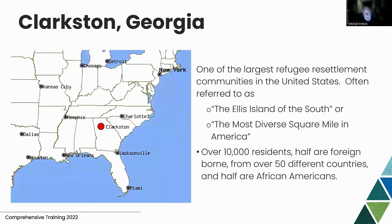Refugees get resettled in communities across the U.S. Clarkston, outside Atlanta, Georgia, is one of the largest refugee resettlement communities in the U.S. — often referred to as the Ellis Island of the South. It has over 10,000 residents: half are foreign-born from 50 different countries, and interestingly, the other half are primarily African-American, making it a quite diverse community in which we're working.